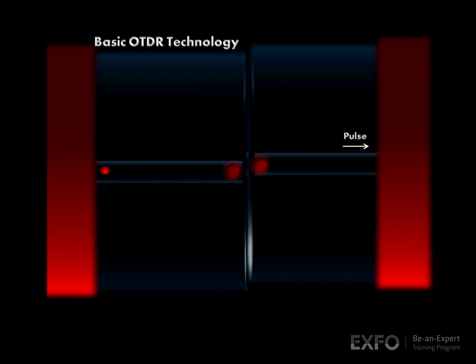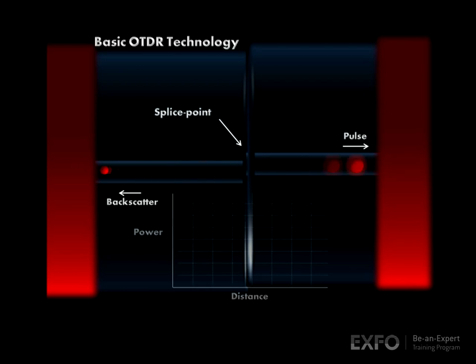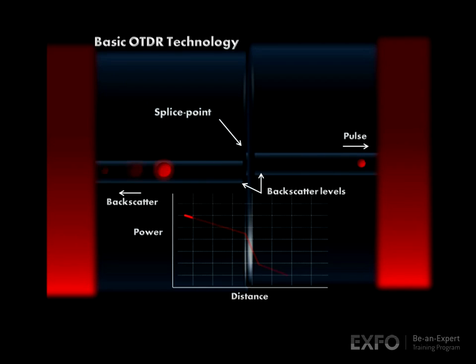One main function of an OTDR is to accurately measure splice loss. It does so by measuring the backscatter levels right before and after the splice.